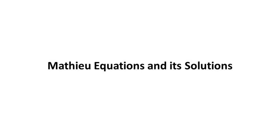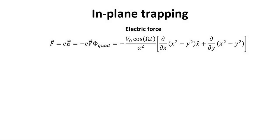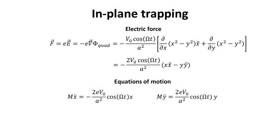Part 5: Mathieu equations and its solutions. Consider the force exerted by the Paul Trap electric field on the point charges. The field is equal to the negative gradient of the potential as follows. It can be simplified to the following. Using Newton's second law, we obtain the equations of motion in the x and y directions.